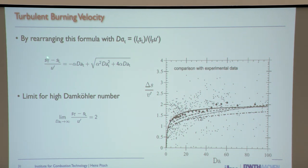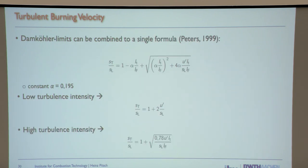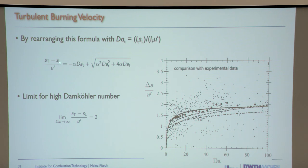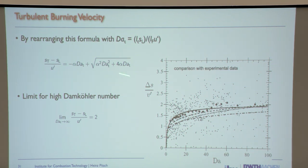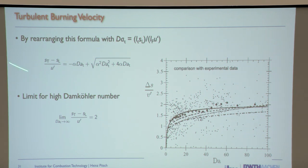We can also write this as s_T over u' as a function of the Damköhler number. By taking the limits — Damköhler very large or very small — we recover the two regimes from the previous slide. This is a form of the equation that can be used across different Karlovitz numbers throughout the combustion regime diagram.